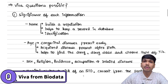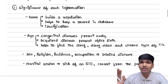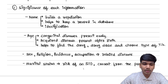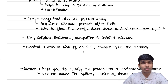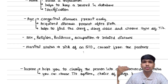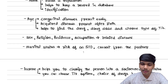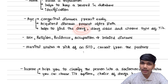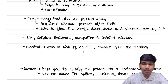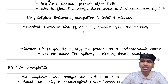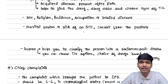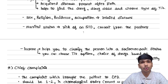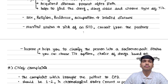Now what are the viva questions possible from the bio data part? It is basically the significance of each piece of information you ask. For example, name helps to build a record in the hospital database and for identification. Age helps us determine if it is a congenital disease — present from birth — or an acquired disease. It also helps us find which drug is suitable, what dose to give, and choose the type of treatment. Based on gender, religion, residence, and occupation, there are many diseases prevalent to certain age groups, certain areas — endemic diseases — and certain occupations.